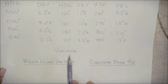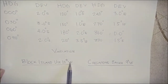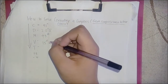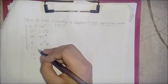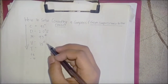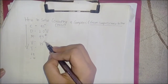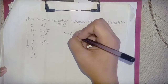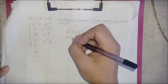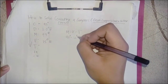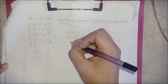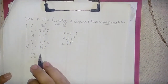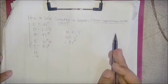From the deviation table, we can see the variation listed for Black Island is 15 degrees West. We apply the 15-degree West variation. Adding the variation value of 2.0 gives us 3.0, so our final true course outcome is 82 degrees. This is how to solve correcting a compass from compass course to true course.